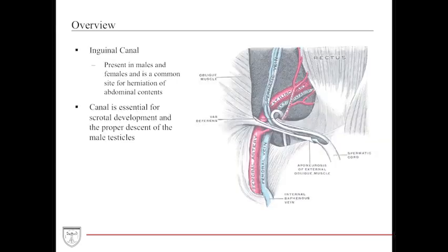The inguinal canal is a very important abdominal structure. It is present in both males and females and is a common site for herniation of abdominal contents. The canal is especially important in men for scrotal development and the proper descent of the male testicle.